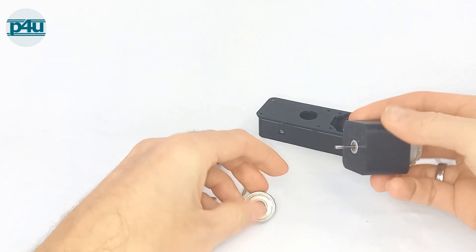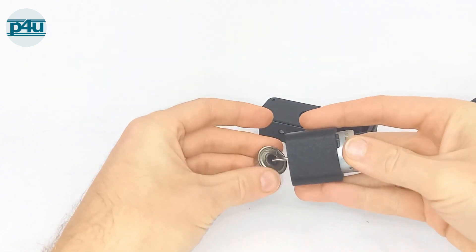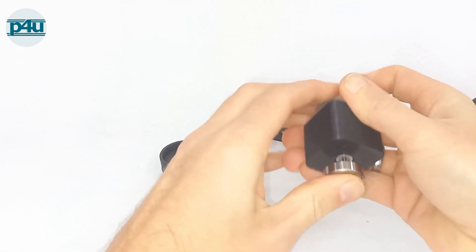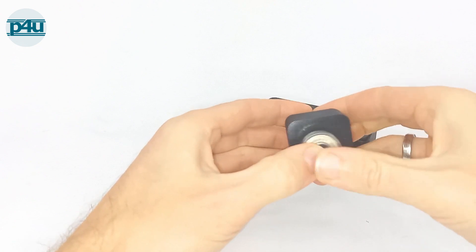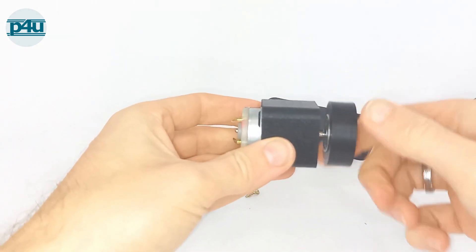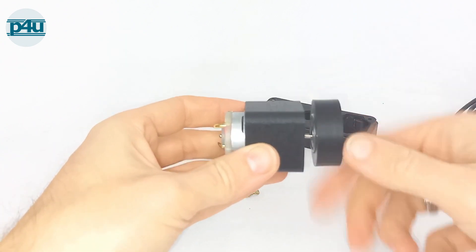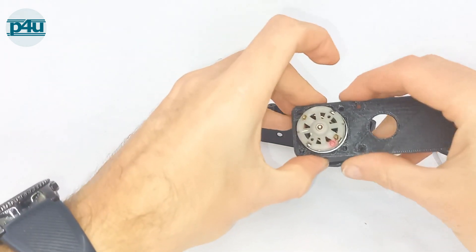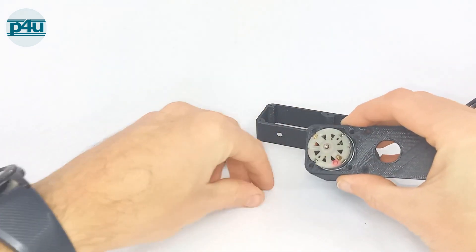Now we can connect the bearing with the engine. And connect it with the plate. The next step is to screw the whole case together.